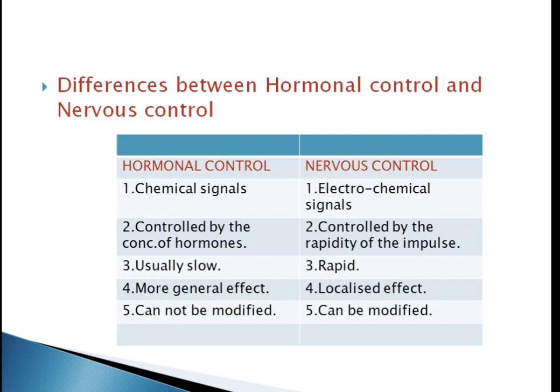The third property is the speed of signal. Hormonal control is usually slower by comparison, whereas in nervous control it is rapid. The next property is the effect in the body. Hormonal control has a more general effect — hormones can influence many cells in many different parts of the body — whereas nervous control has a localized effect, as each individual neuron links with only one or a few cells.